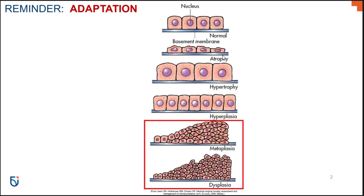In the case of atrophy, this is where there's a decrease in cell size, and you know that if enough cells in an organ decrease, then the entire organ itself atrophies or decreases in size. With hypertrophy, you can note the opposite effects of atrophy where there's an increase in size.